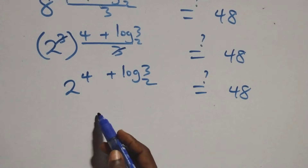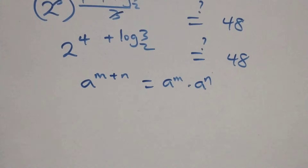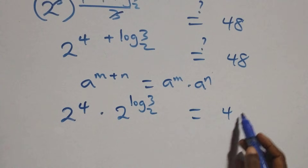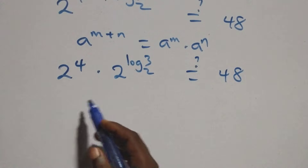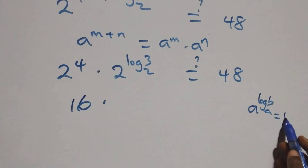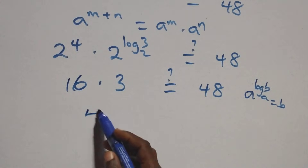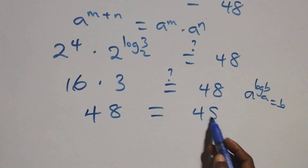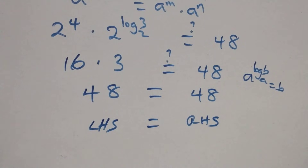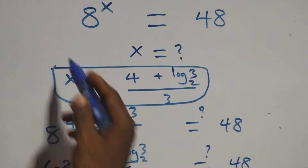We apply the law of indices: a raised to the power m plus n equals a raised to the power m times a raised to the power n. So we have 2 raised to the power 4 times 2 raised to the power log 3 base 2, equals 48. Now, 2 raised to the power 4 is 16, and using the identity a raised to the power log b base a equals b, we have 2 raised to the power log 3 base 2 equals 3. So 16 times 3 equals 48, which equals 48. The left-hand side equals the right-hand side. Therefore, we conclude that x equals to 4 plus log 3 base 2, all over 3, satisfies this given problem.